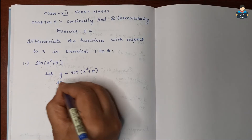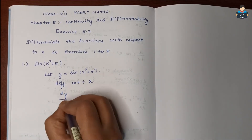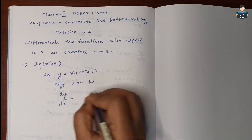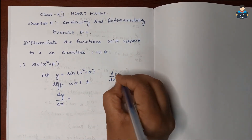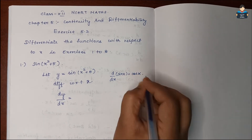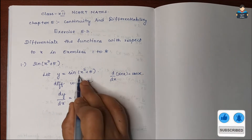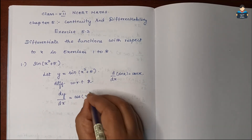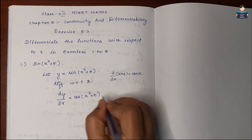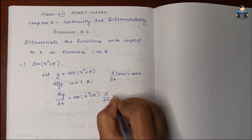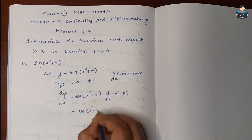Let y = sin(x² + 5). We need to find dy/dx. This is a composite function, so we apply the chain rule. The differentiation of sin x is cos x, so we get cos(x² + 5), and then we differentiate the inner function (x² + 5) with respect to x.